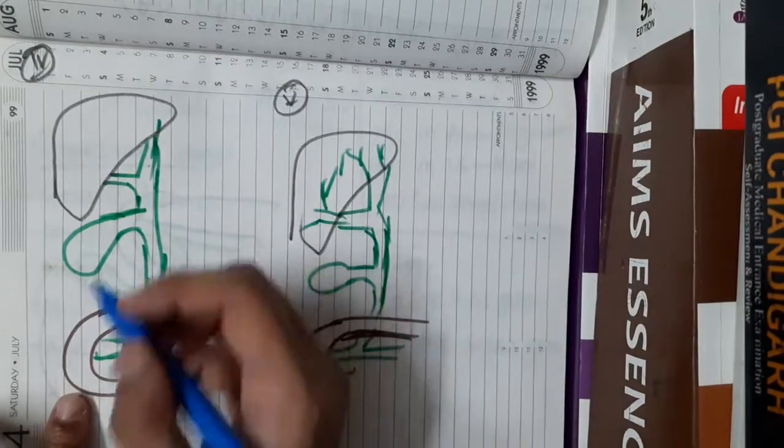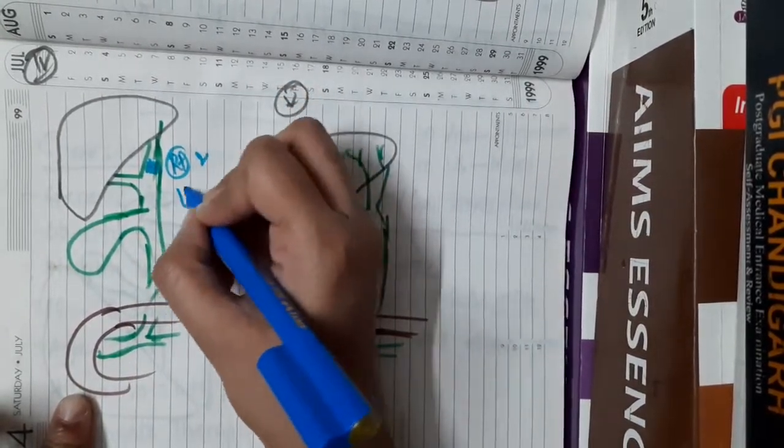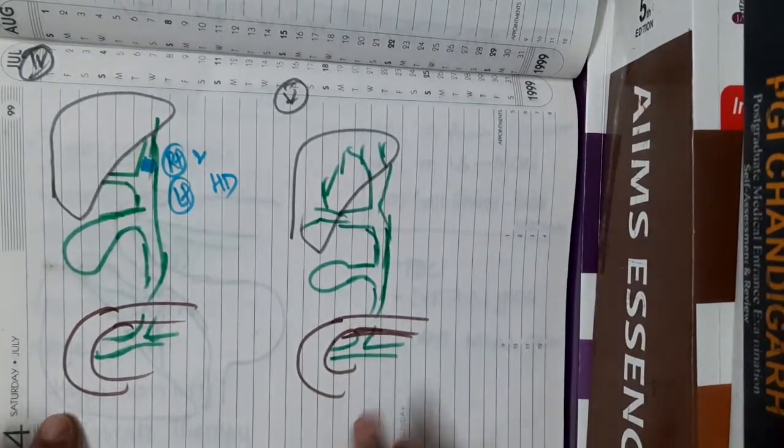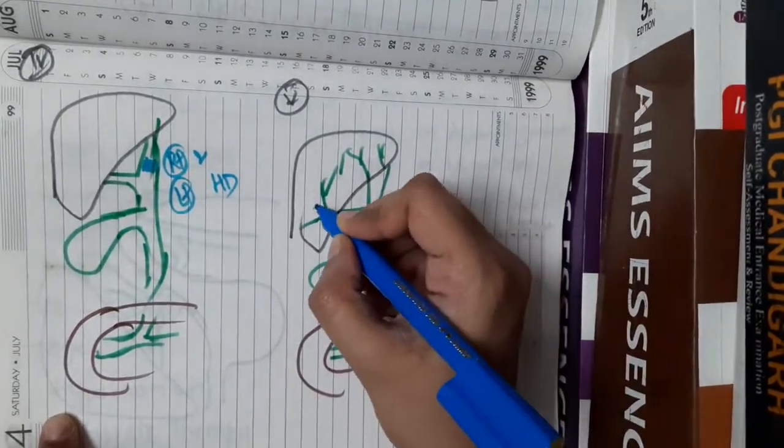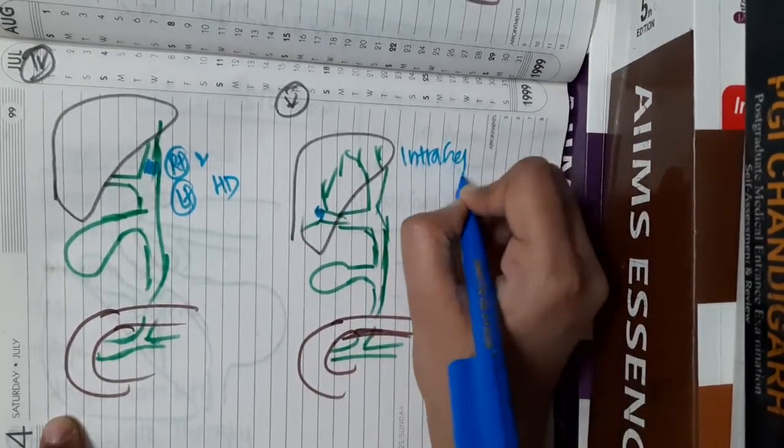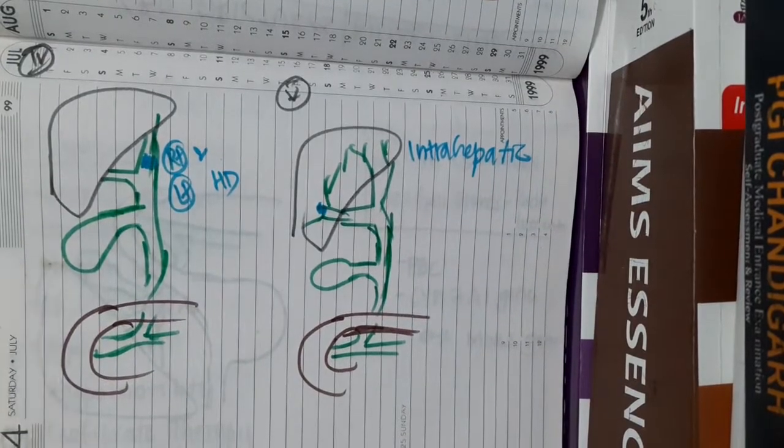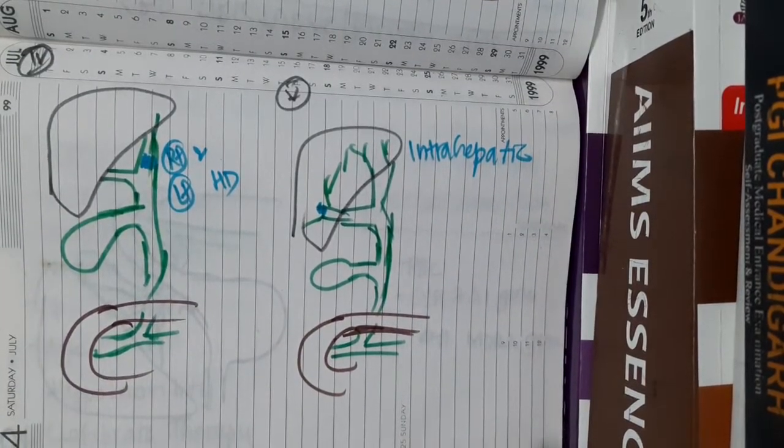In type 4, the biliary stricture is present either in right or left hepatic duct. Then in type 5, the biliary stricture is mainly intra-hepatic. Biliary stricture is seen in type 5 of Bismuth classification.